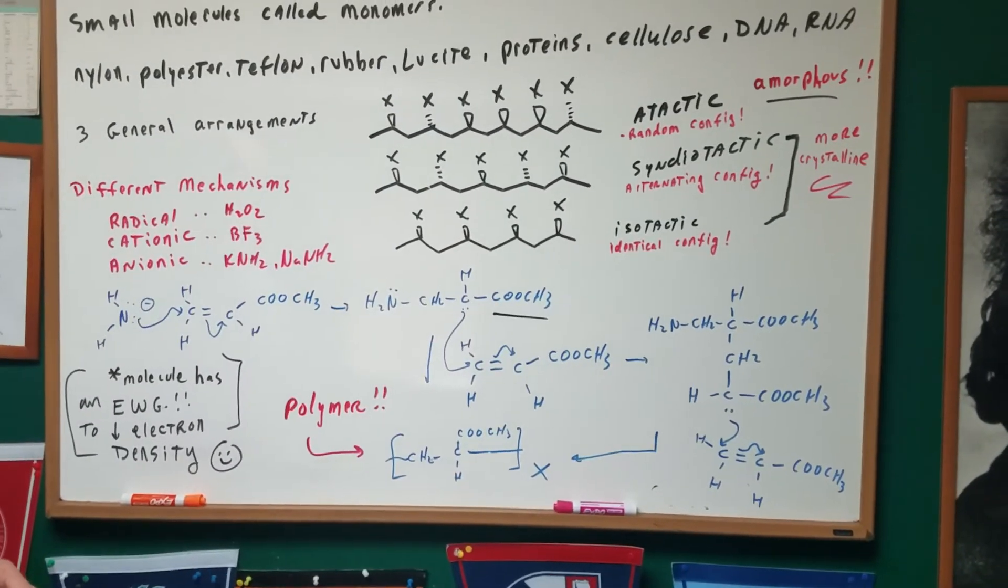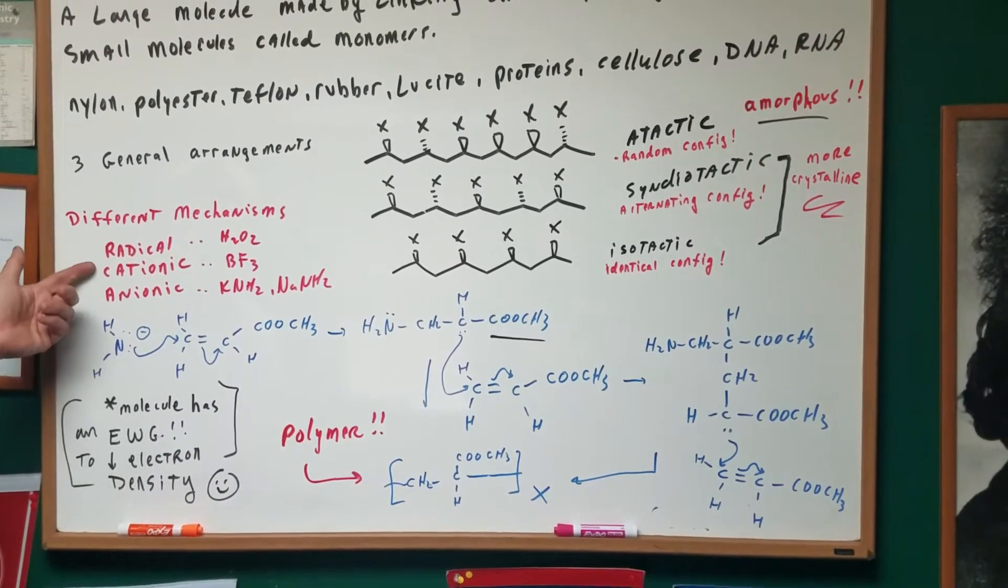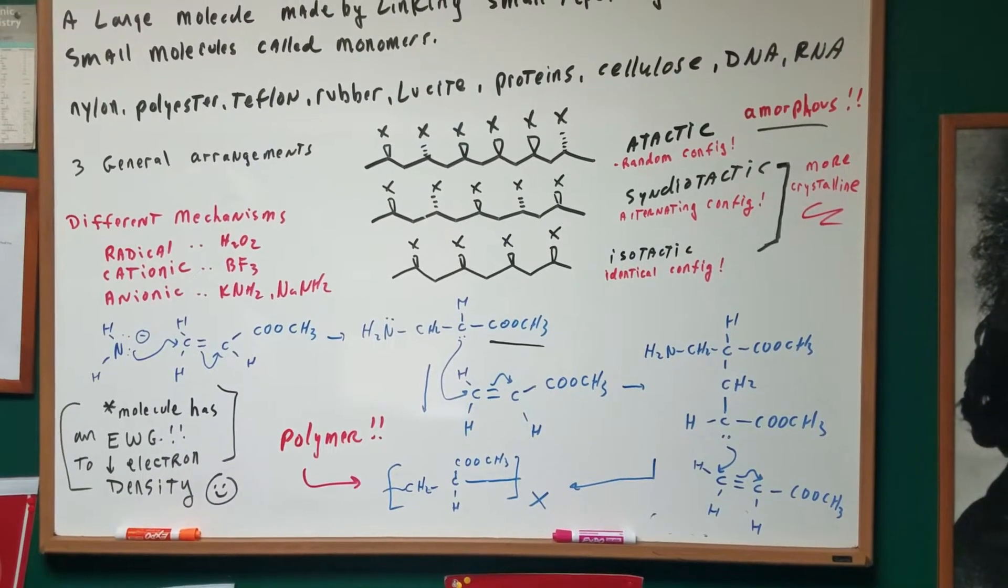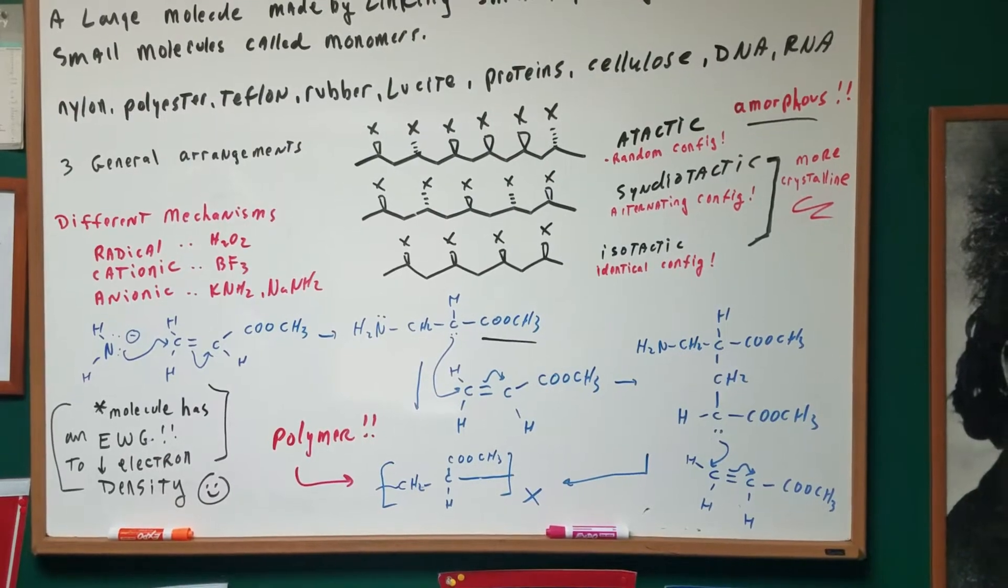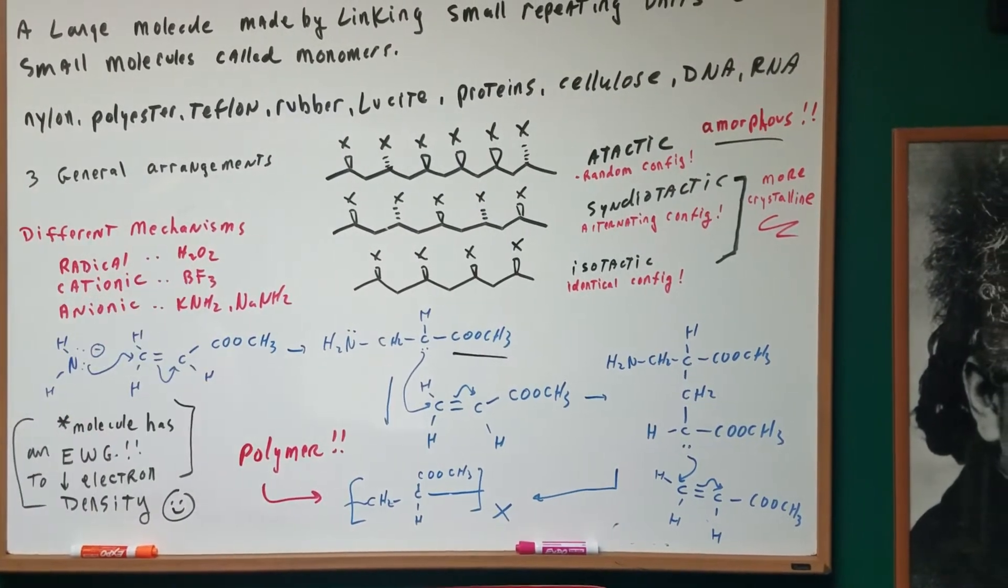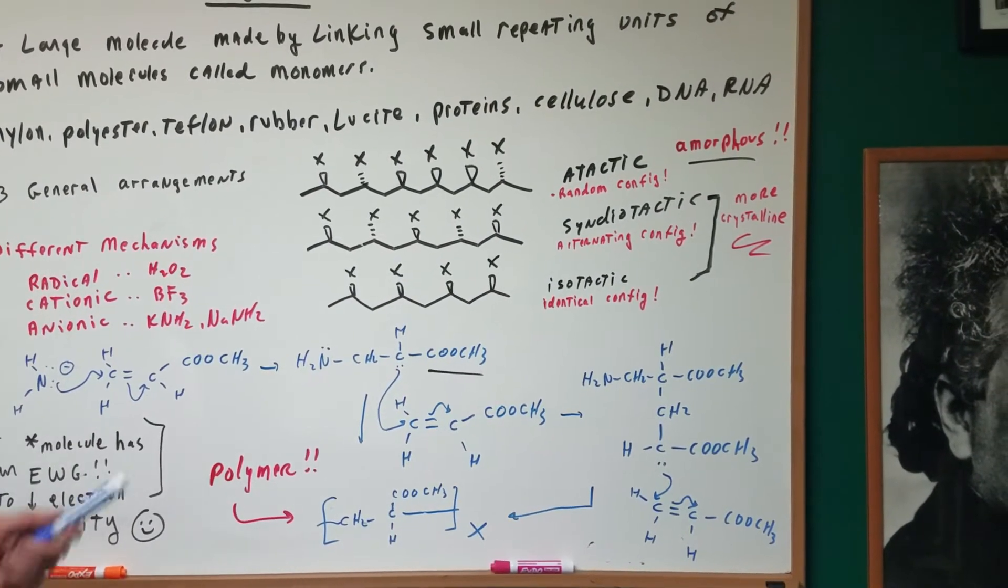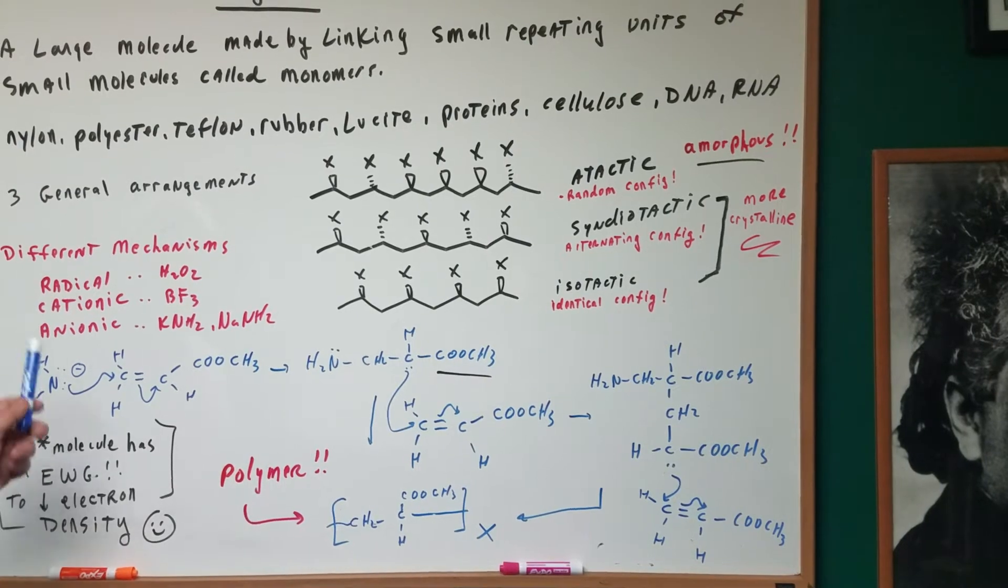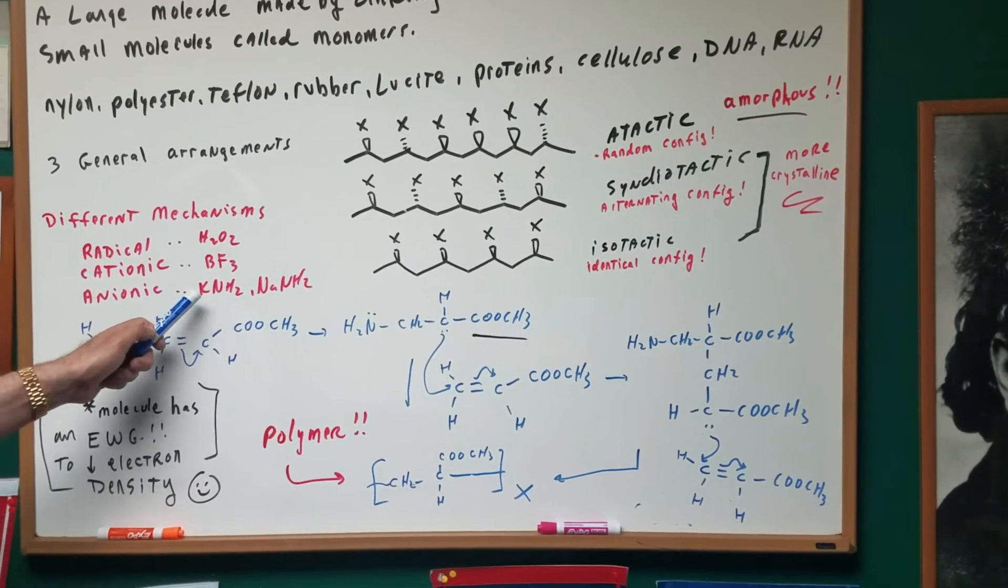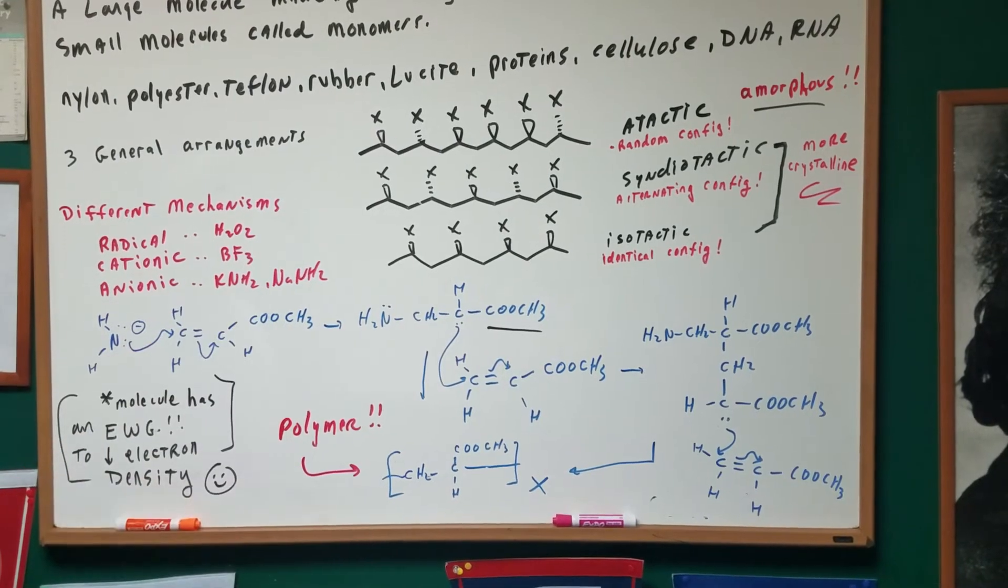Now, in order to initiate a polymerization, we have different mechanisms. We can have a radical mechanism, cationic mechanism, or an anionic mechanism. Radical initiation is often done with things like hydrogen peroxide. Cationic with things like Lewis acid, such as boron trifluoride. And an anionic polymerization would be done with things like potassium amide and sodamide.